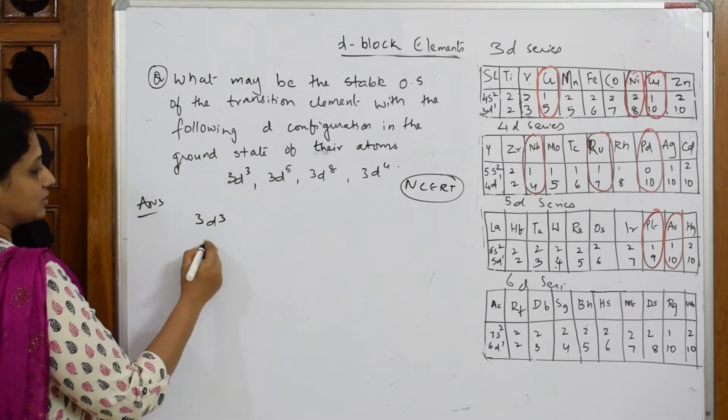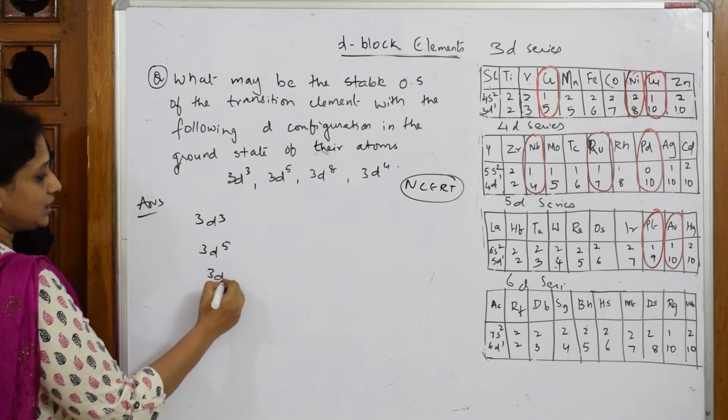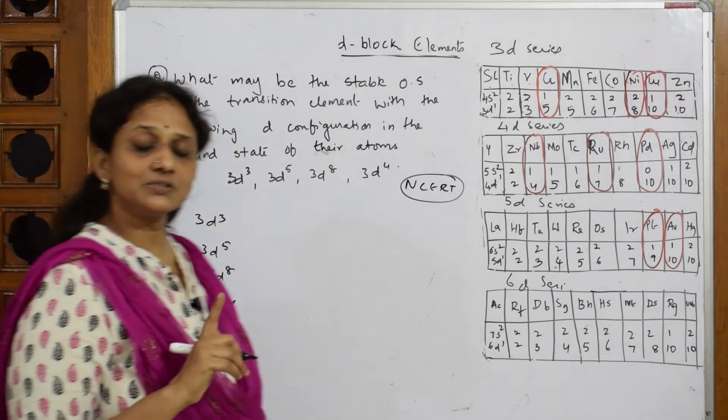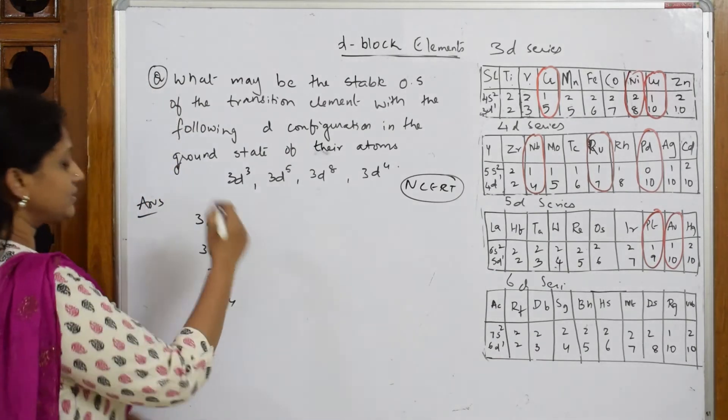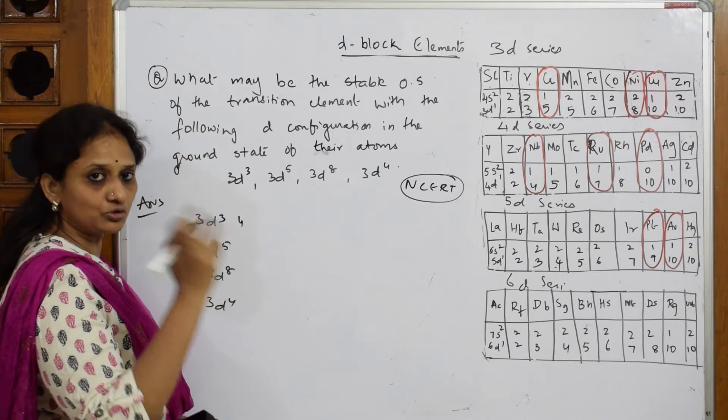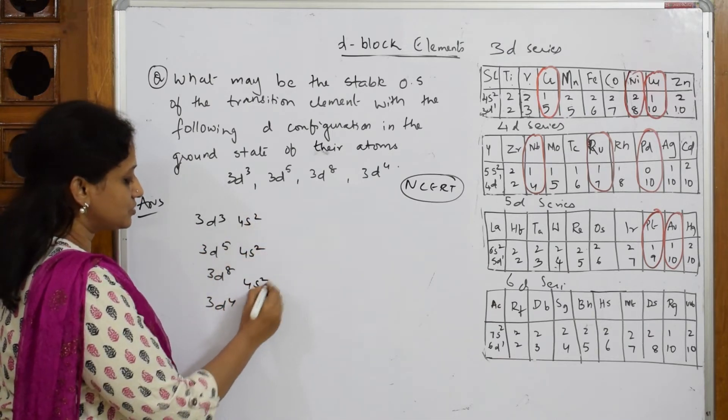As soon as such a question is given, take the particular data: 3d⁵, 3d⁸, 3d⁴. We have both ns and n minus 1 d orbitals. Since d is already given, try to write the s orbital. S is maximum 0 to 2, so write 4s² for each: 4s², 4s², 4s².